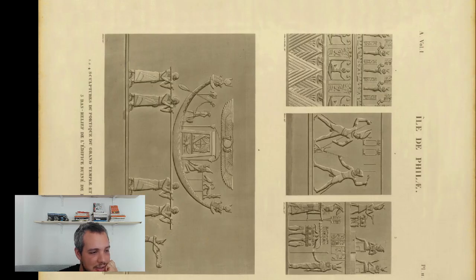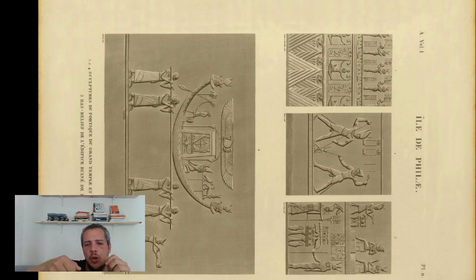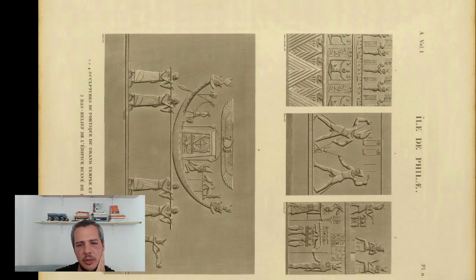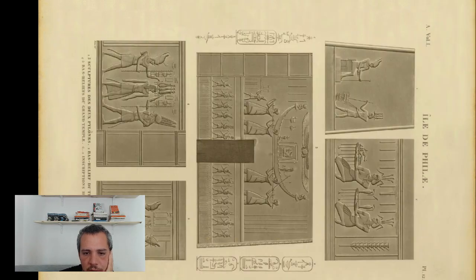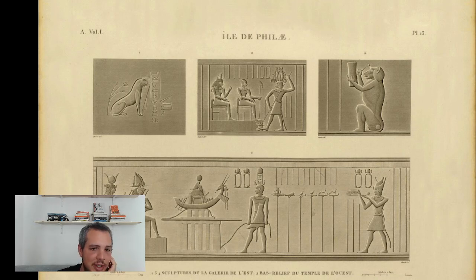Now here are some depictions — bas-reliefs, where you carve into the stone. Some of them are landscapes, some are portraits. I'm not going to rotate every time we have a slide. And look — a monkey! This is the first time I see a monkey depicted somewhere in an Egyptian relief. Pretty cool.